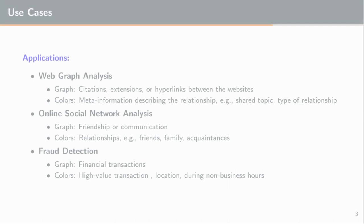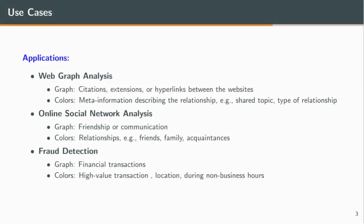A possible application is online social network analysis. The participants of large-scale social networks are commonly connected to hundreds or even thousands of other users. Typically, user relationships are heterogeneous and can be distinguished in, for example, friendship, family membership, acquaintance, or work colleague. By requiring specific numbers of edge attributes, we identify densest subgraphs related across multiple attribute dimensions. In addition to mere interconnections, the resulting dense subgraphs embody communities with diverse relationships.